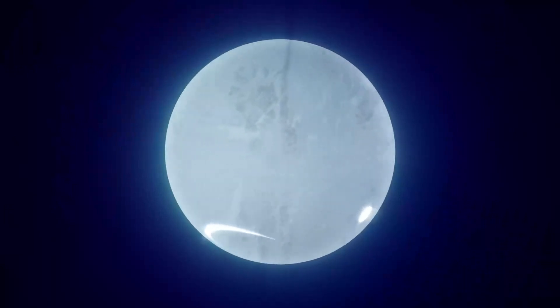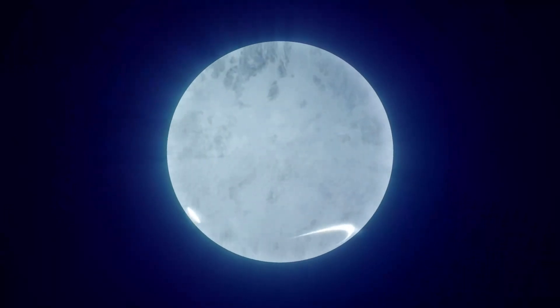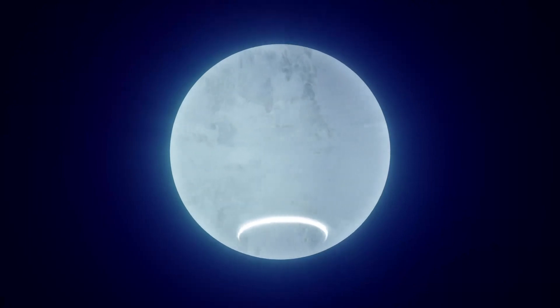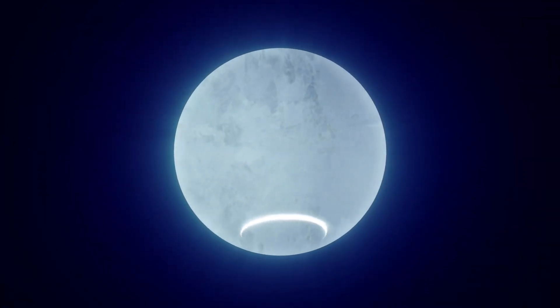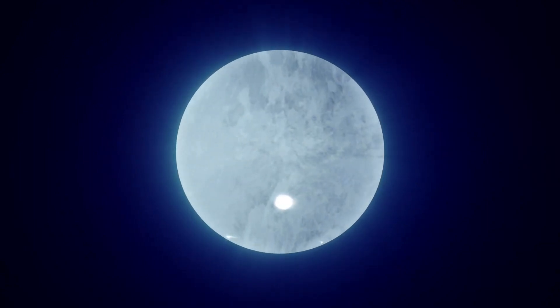A pulsar is so dense that its gravity bends the fabric of space-time around it. NICER's precise X-ray measurements allow scientists to take advantage of this effect to see light from the far side of the pulsar.